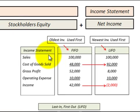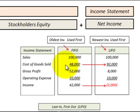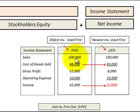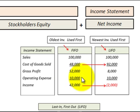Let's look at our income statement and make the comparison between FIFO and LIFO. Starting with FIFO — we used our oldest inventory first, so cost of goods sold would include our oldest inventory with the lower costs. Taking sales of $100,000 less cost of goods sold of $48,000, our gross profit would be $52,000. Then subtracting $10,000 of operating expenses, our net income would be $42,000.